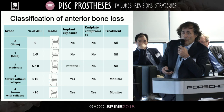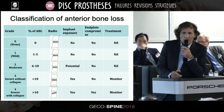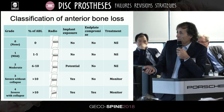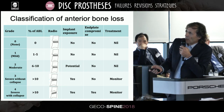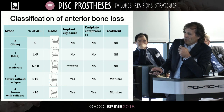The anterior bone loss was classified into four groups: mild, moderate, severe without collapse, and severe with collapse.